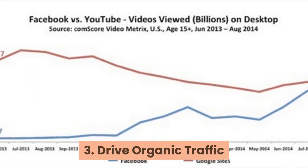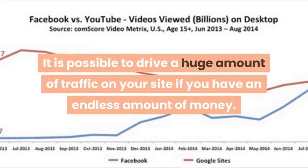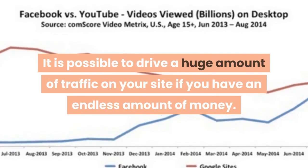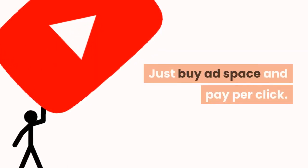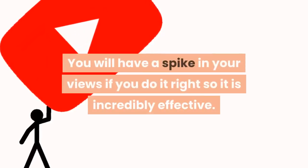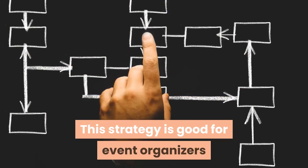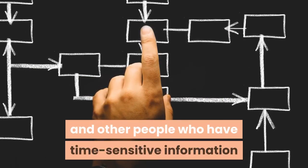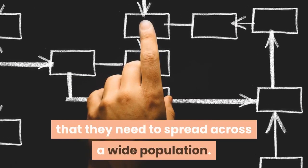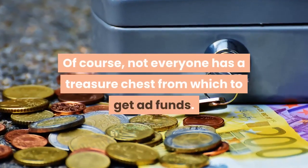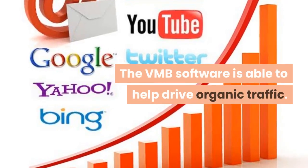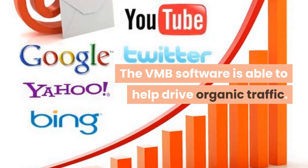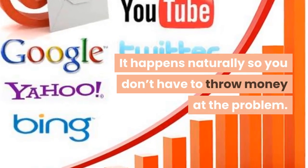Feature 3: Drive organic traffic. It is possible to drive a huge amount of traffic to your site if you have an endless amount of money — just buy ad space and pay per click. You will have a spike in your views if you do it right. This strategy is good for event organizers and others who have time-sensitive information they need to spread across a wide population. Of course, not everyone has a treasure chest for ad funds. The VMB software is able to help drive organic traffic, so you don't have to throw money at the problem.